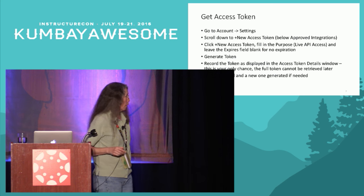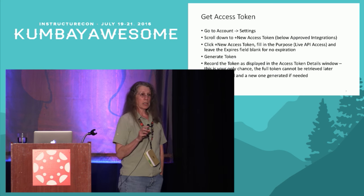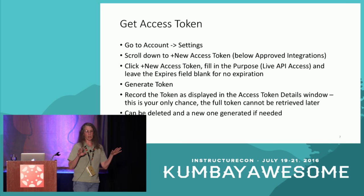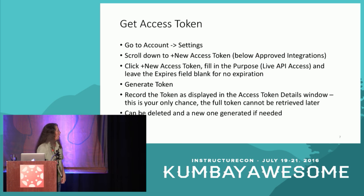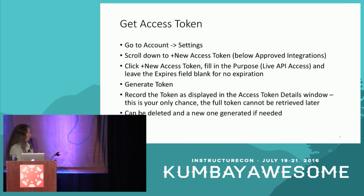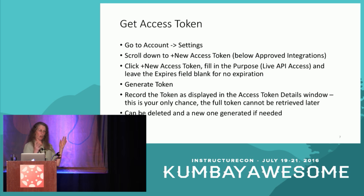The first thing you have to do is get an access token. It's basically both your username and your password rolled into one, so never let anybody else use it — if they do, they're behaving as you, and all their actions are under your user ID. You go into your personal account settings, scroll down to new access tokens — it's below the approved integrations. You click to get a new access token, generate it, and then you have to record it. This really is your only chance; if you don't record it in the pop-up screen, it's gone. You can delete it and generate a new one any time.